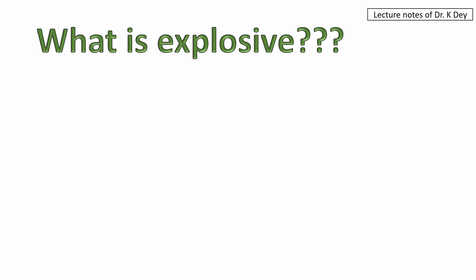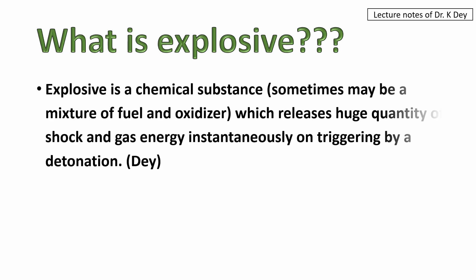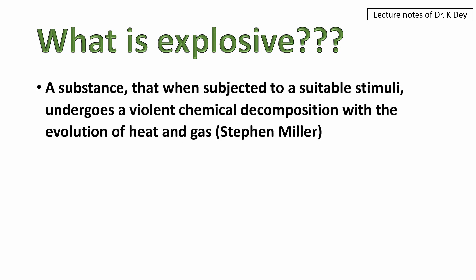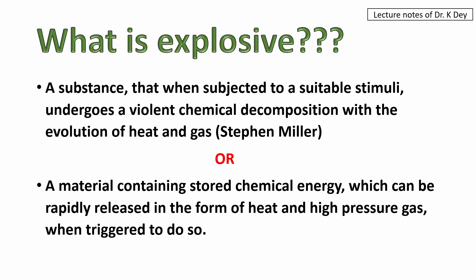So let's define what is an explosive. According to Dr. Kosigde, an explosive is a chemical substance — sometimes a mixture of fuel and oxidizer — which releases a huge quantity of shock and gas energy instantaneously, triggered by detonation. Dr. Stephen Miller defined it as a substance that, when subjected to a suitable stimulus, undergoes violent chemical decomposition with the evolution of heat and gas. Others define explosives as a material containing stored chemical energy which can be rapidly released in the form of heat and gas pressure when triggered to do so.